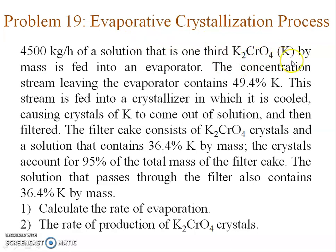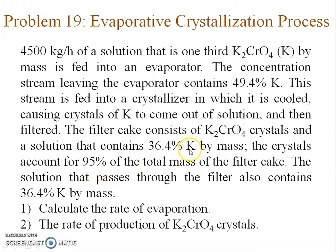This problem is based on evaporative crystallization of K2CrO4 — for simplicity I will refer to it as component k. So 4500 kg per hour of a solution which contains one-third of k is fed to an evaporator. In the evaporator some water is evaporated so that the solution coming out contains 49.4 percent k. This stream is fed to a crystallizer where it is cooled. Crystals of k come out along with some entrained solution, which contains 36.4 percent k by mass. The crystals account for 95 percent of the total mass of the filter cake, so 95 percent is dry crystals and 5 percent is entrained liquid. The filtrate coming out of the filter has the same composition — 36.4 percent k by mass.